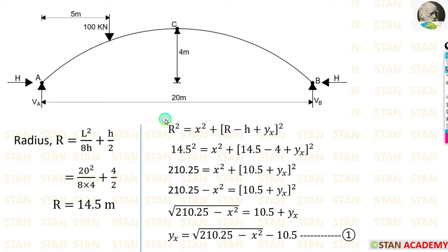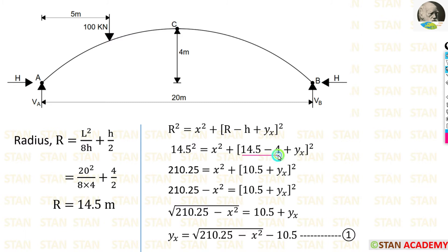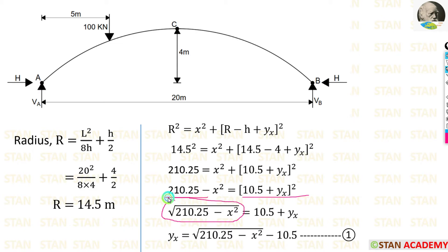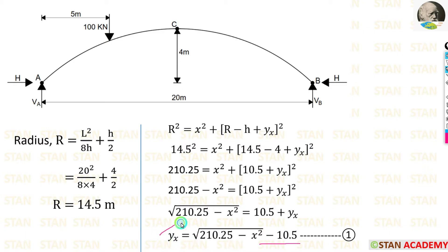Also in the previous video we derived one equation for the Yx value. Here we can apply the value of R as 14.5 and the rise H as 4. Then we add these two values to get 10.5, and take the X squared term to the left side where it becomes negative. Taking the root on both sides, on the left side we get the square root of 210.25 minus X squared, and on the right side we get 10.5 plus Yx. Taking 10.5 to the left side, we have our equation for Yx. Let us keep this as equation number 1 — we need to use it later.